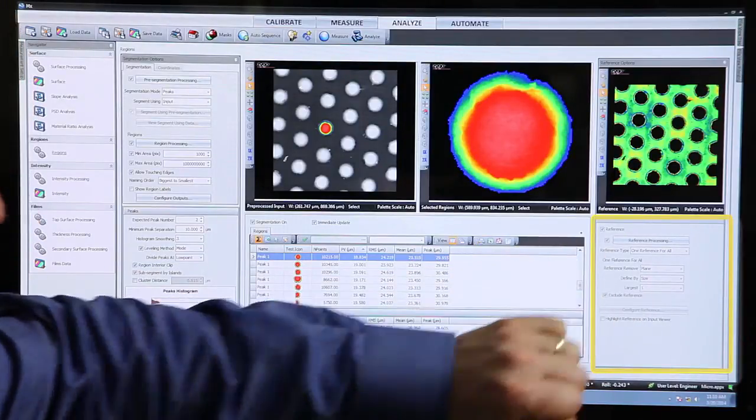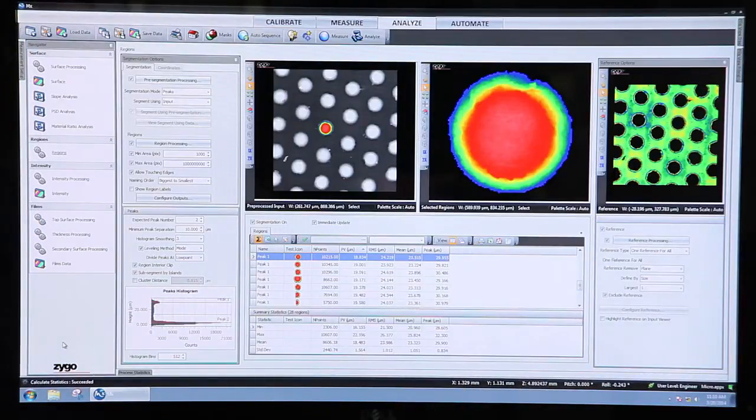And then on the right-hand side, underneath that reference map, we can separately process the reference map in order to provide a real clean reference for making good height measurements and segmentation of the individual regions.